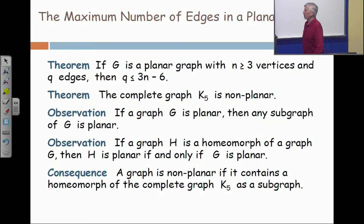And since a graph is planar if and only if a homeomorph of the graph is planar, we have as a consequence that any graph that contains a homeomorph of the complete graph on 5 vertices is not planar.